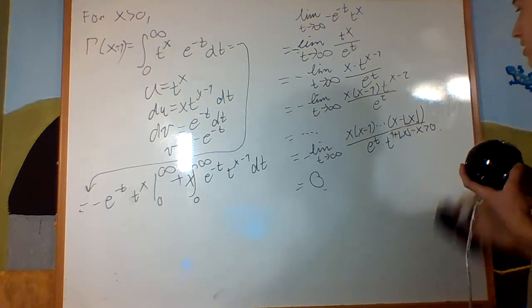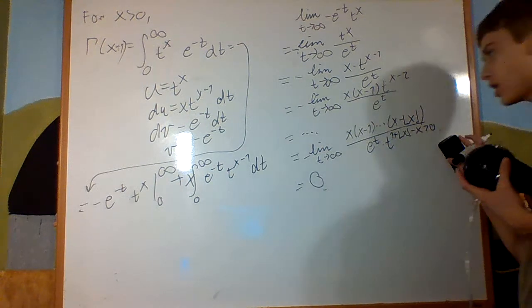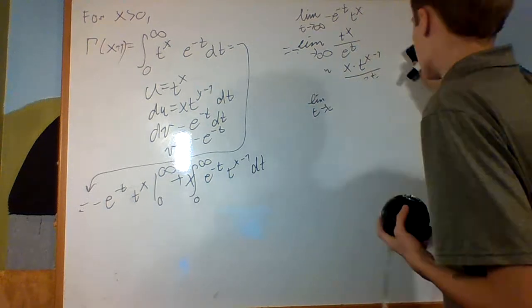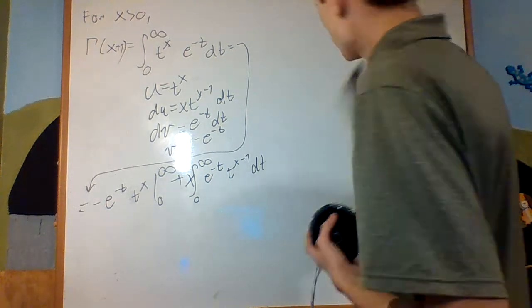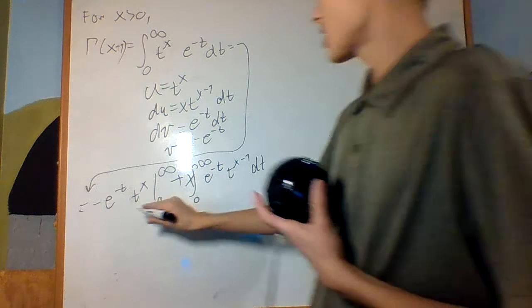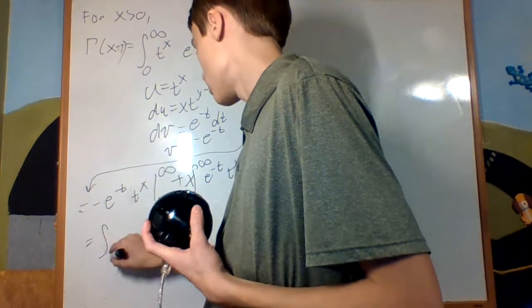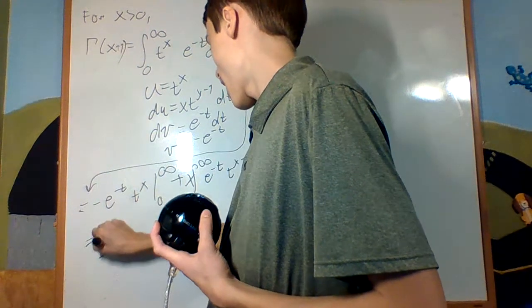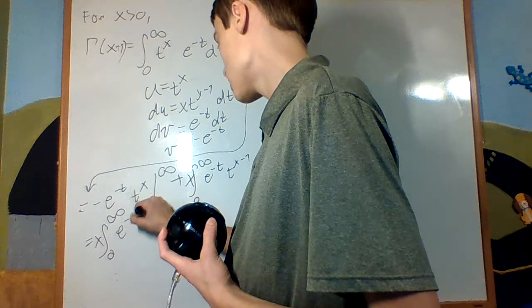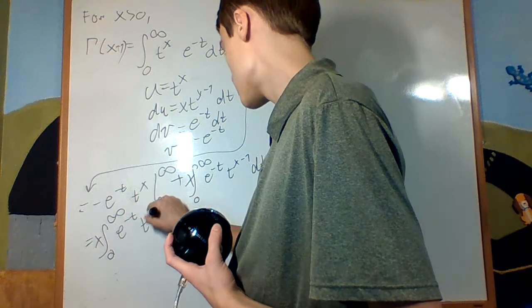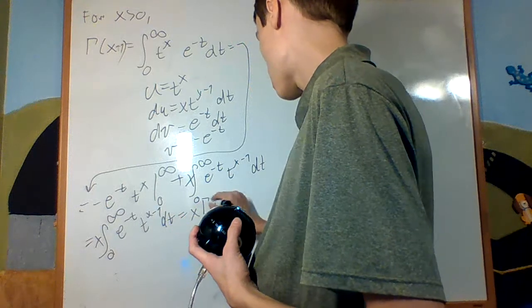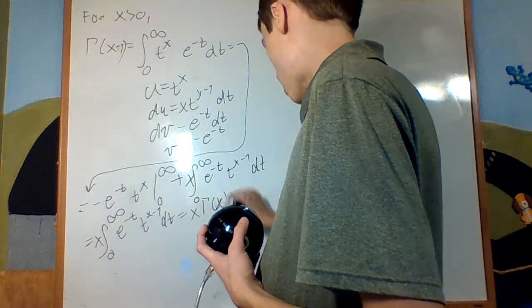So that evaluates to 0 for x greater than 0. The floor function basically means round down. We're left with x times the integral from 0 to infinity of e to the negative t times t to the x minus 1 dt, which is x times gamma of x.